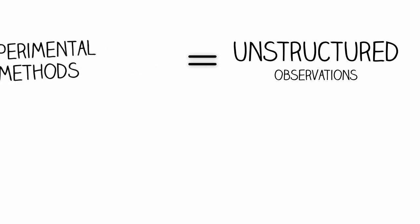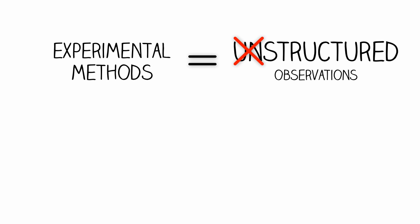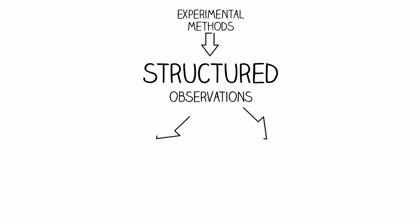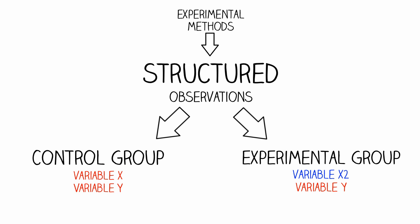Experimental methods require structured observation that results in the manipulation of variables. The term variables simply refers to something that varies. In this case, we need to discriminate between two types of variables: independent and dependent variables.